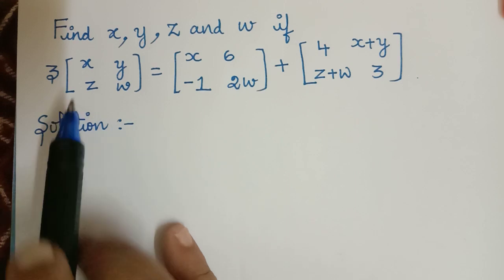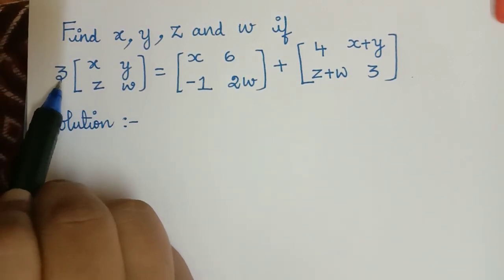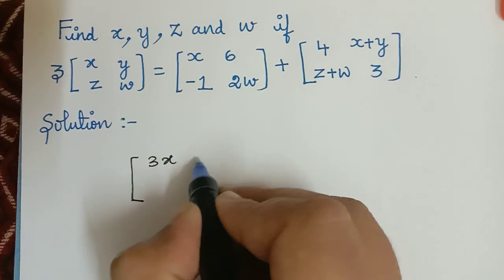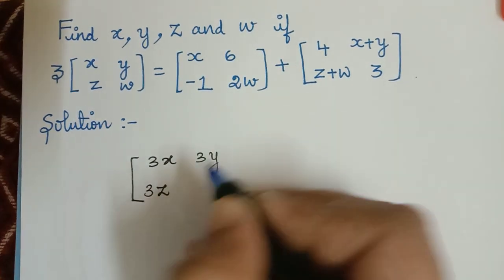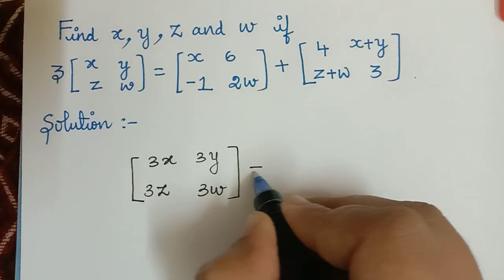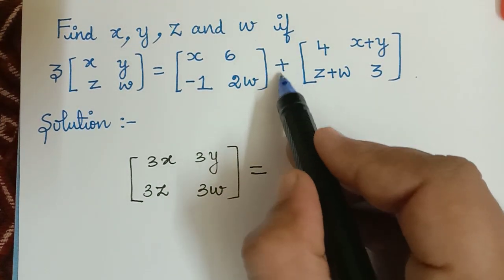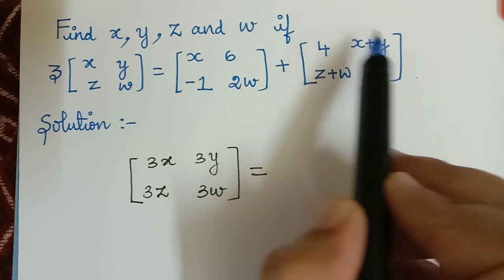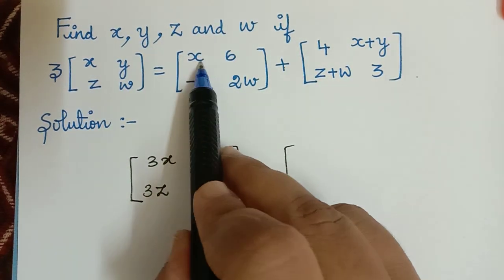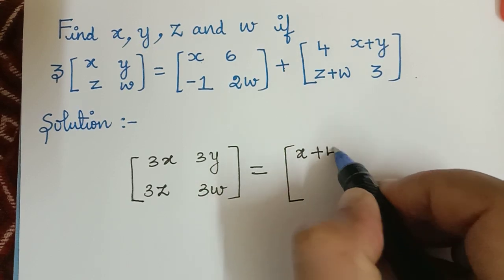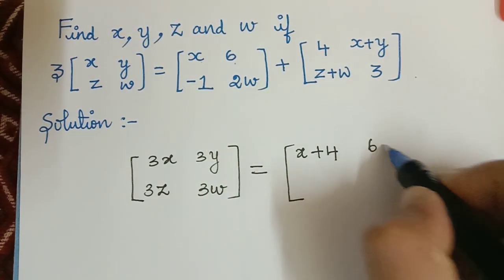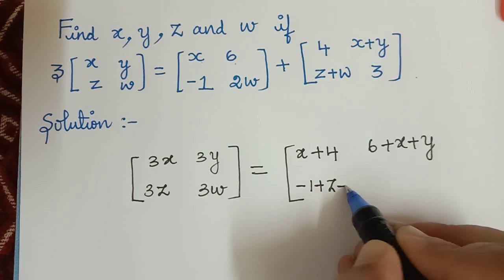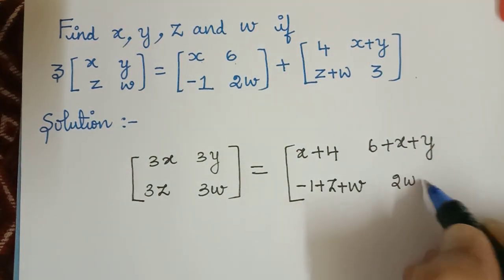So if we simplify the left hand side, we multiply 3 to each element of this matrix. So we will get it as 3x, 3y, 3z, and 3w, and that will be equal to the right hand side. We have an addition over here, so we have to add these two matrices by adding the corresponding elements. That is, the element x will be added to 4, so we get x plus 4. Similarly, 6 plus x plus y, then minus 1 plus z plus w, and then 2w plus 3.